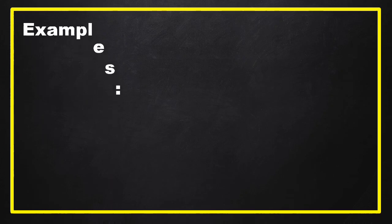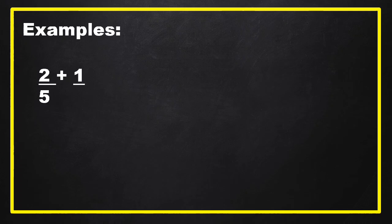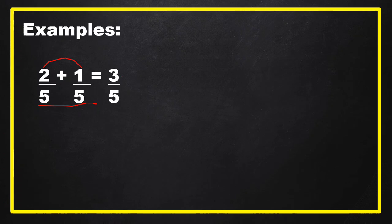To understand our rule, we have some examples. The first one is 2 fifths plus 1 fifth. These are similar fractions because they have the same denominator, 5. So all we have to do is add the numerators: 2 plus 1 equals 3, then just copy 5 as our denominator. Our final answer is 3 fifths.